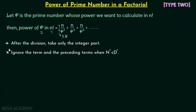Now moving on to point number 2: ignore the term and the preceding terms when the numerator is less than the denominator. This is an important point and is obtained from point number 1 itself. When the numerator is less than the denominator we can ignore that term and the preceding terms. Let us understand the reason using the same scenario: n equal to 7 and p equal to 2.